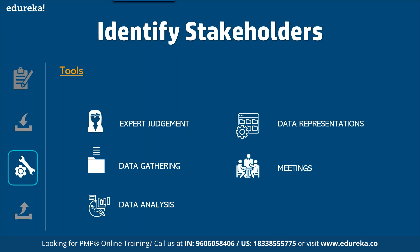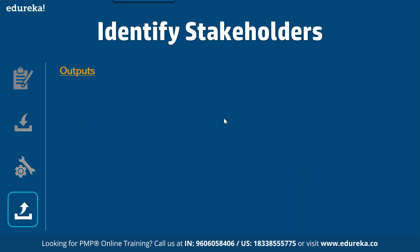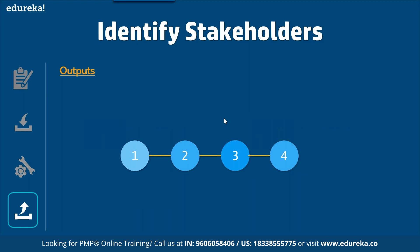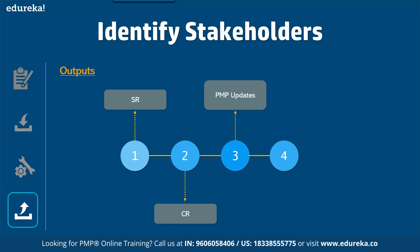Coming to the outputs for identify stakeholders, we have four outputs. First is the stakeholder register. Second is the change request. Third is the project management plan updates. The last one is project document updates. These are the four major outputs that this process produces.